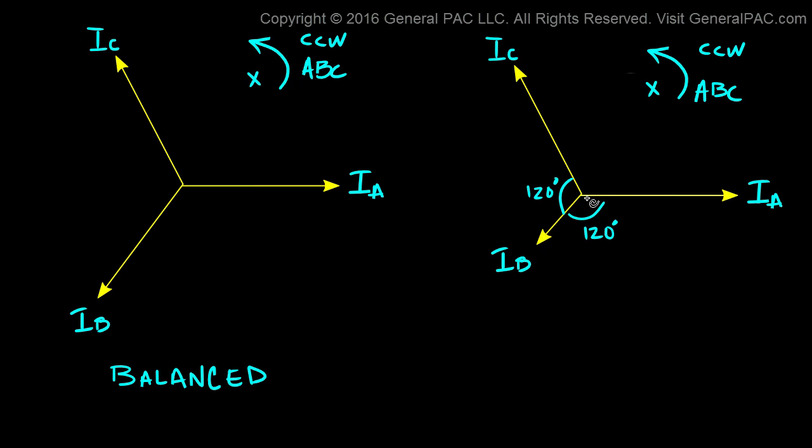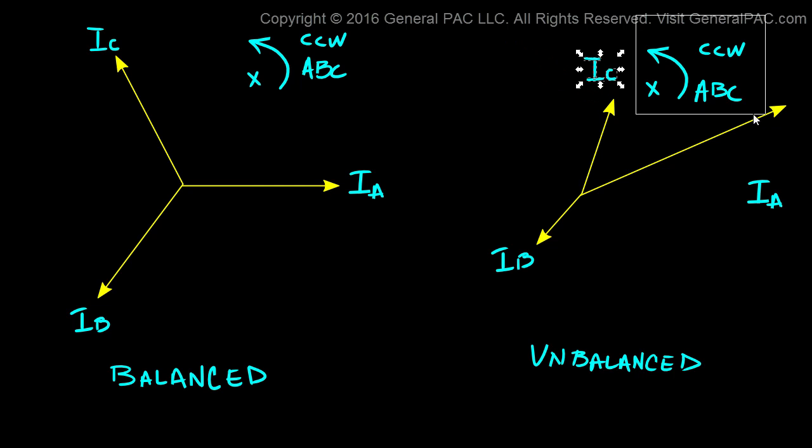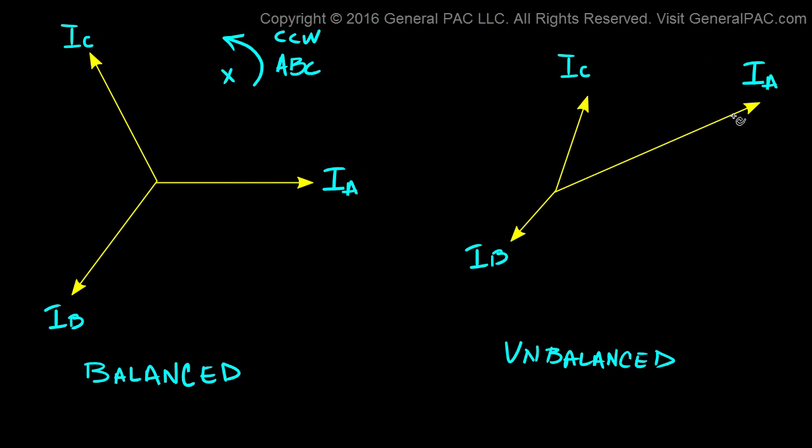But the magnitude of phasor B is not equal to the magnitude of phasor C, and IB is also not equal to the magnitude of IA. So because the magnitude of IB changes, this becomes an unbalanced set. Let's make the unbalance a little bit more severe. So this configuration is also an unbalanced set of phasors.